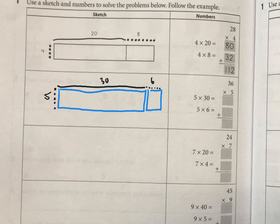This first rectangle here would give me 5 times 30, and that would be 150, and the second rectangle here is going to be 6 times 5, or 5 times 6, and then I add those up for a final answer.